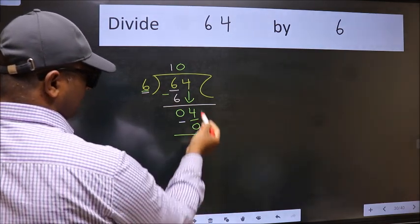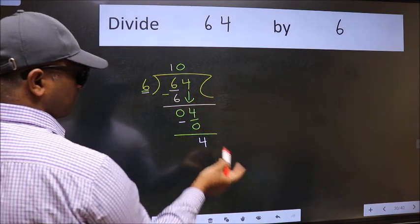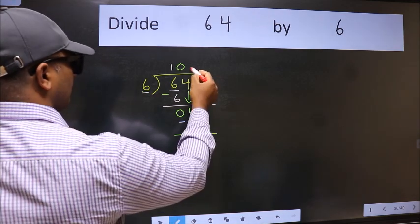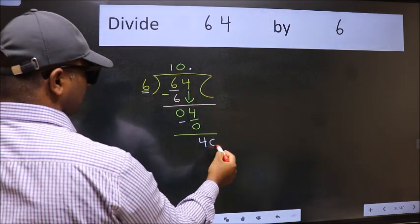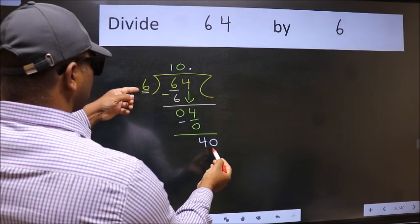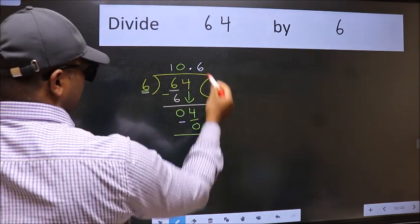Over here, we did not bring any number down, and 4 is smaller than 6. So now we can put a dot and take 0. So 40. A number close to 40 in the 6 table is 6 times 6, which is 36.